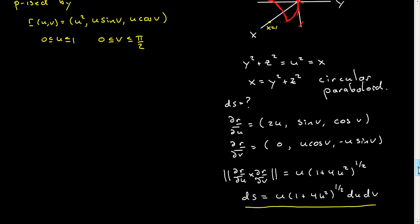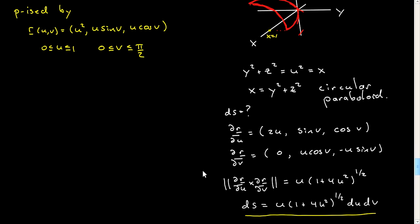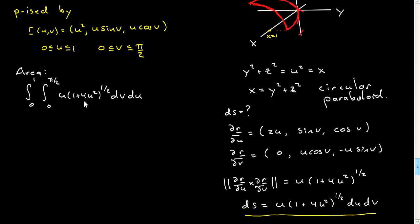Just to say one other thing before doing the actual problem: if you had been asked to compute just the area of this bit of surface, what you would do is integrate over the parametrization — u from 0 to 1, v from 0 to pi over 2 — of ds, which is u(1 + 4u²)^(1/2) dv du. The v integral separates, and the u integral can be integrated rather easily. Finding areas of paraboloids by integrating surface area elements is quite doable, but that's not the question you were asked.